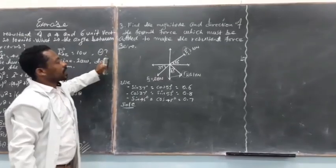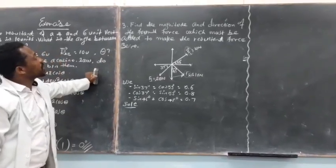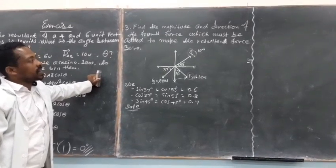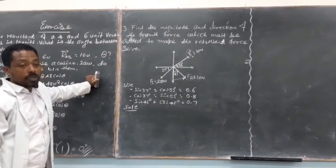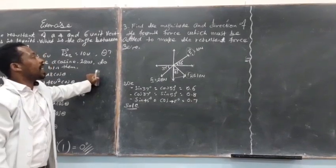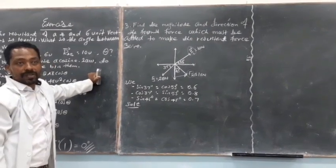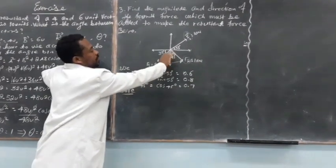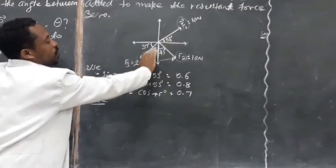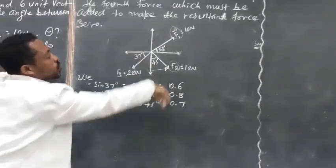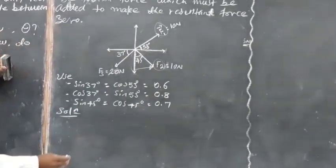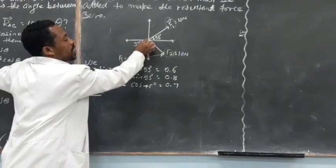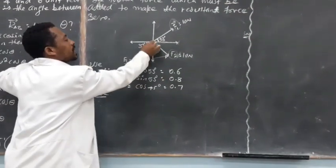Great, but my peers, number three says: find the magnitude and the direction of the first force which must be added to make the resultant force zero. And look here, three different forces are given to us. This is a great example for concurrent forces or concurrent vectors.